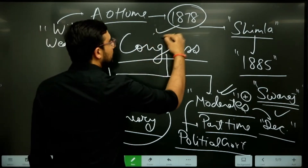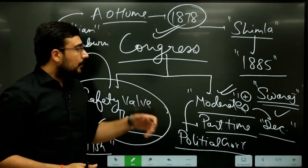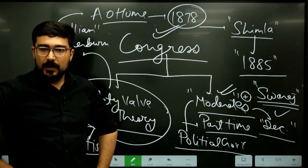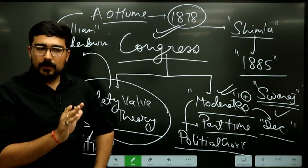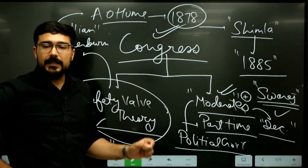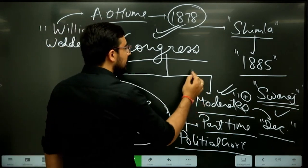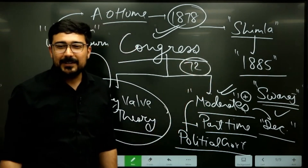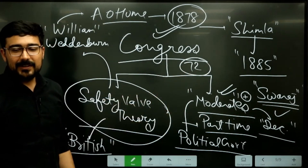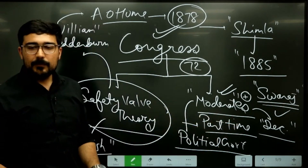It is not entirely true that Congress was just a safety valve. If A.O. Hume came to know about these reports in 1878, why did he wait for 7 years? When Congress was being created, it was not getting a good reception from the government. By that time the Governor General was Dufferin. Dufferin was not in favor of Congress — in fact, he criticized it in 1888, calling it a microscopic minority. There were 72 delegates speaking on behalf of millions of Indians, and the annual sessions used to happen for only 3 days.